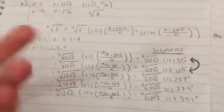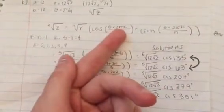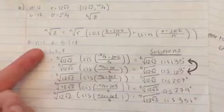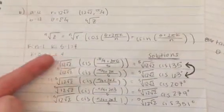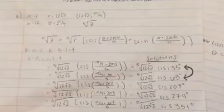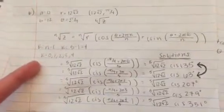So basically, first I found our K value right here. K is equal to N minus 1, and since we're finding the 5th root, N is equal to 5, and 5 minus 1 is 4, so our K values are going to range from 0, 1, 2, 3, 4.